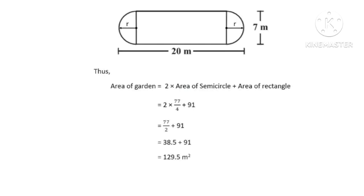Area of garden equals 2 times area of semi-circle plus area of rectangle equals 2 times pi r squared plus length times breadth equals 38.5 plus 91 equals 129.5 square meters.